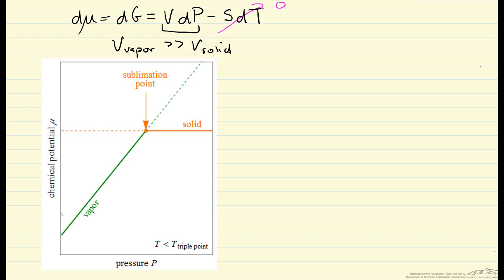The intersection is the sublimation point where we have phase equilibrium and chemical potentials of the two phases are the same.